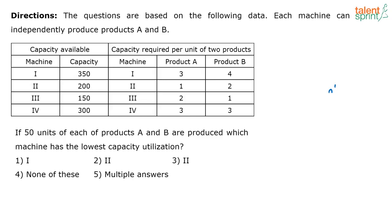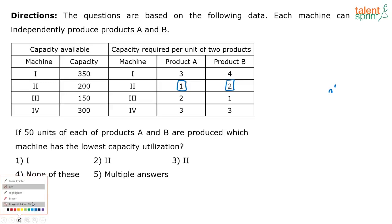First we have to understand what is given in the table - if you understand that, then solving it is easy. Machine one has a capacity of 350 units. Using this machine, to produce product A I will need three units of capacity, and to produce one product B I require four units of its capacity. Machine two has a capacity of 200, requiring one unit to produce one product A and two units to produce one product B.